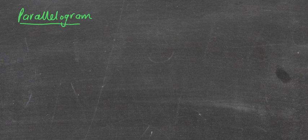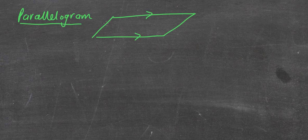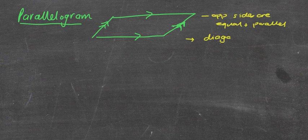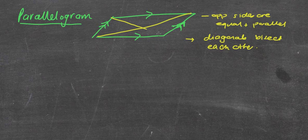Now let's do the parallelogram. A parallelogram is like a rectangle — a pushed-over rectangle. Pretty much all similar properties to a rectangle except for the equal angles. That means we have: opposite sides are equal and parallel. We have diagonals that bisect each other, but they are not equal. So those two diagonals are different lengths; however, each one is cut in half at the intersection point.